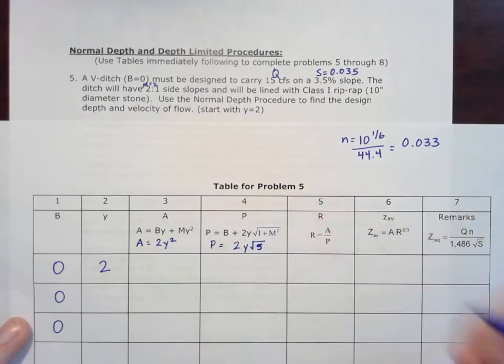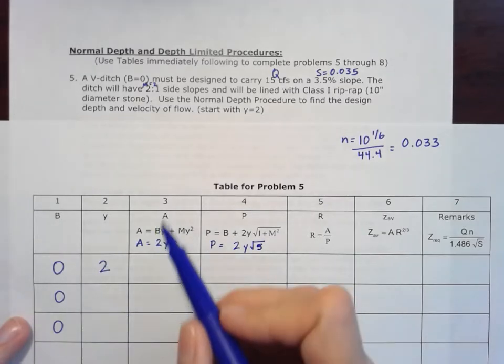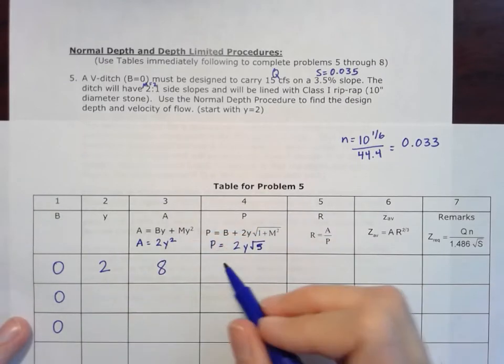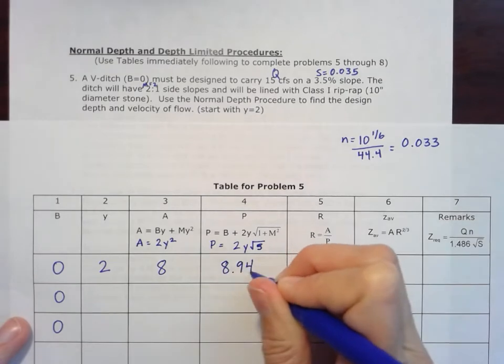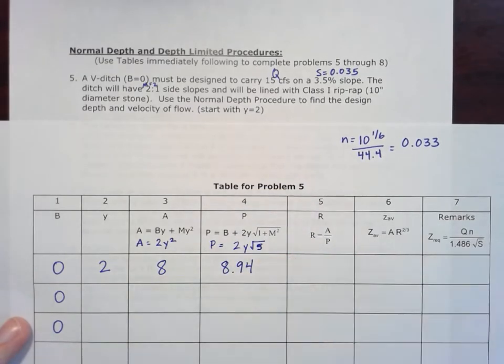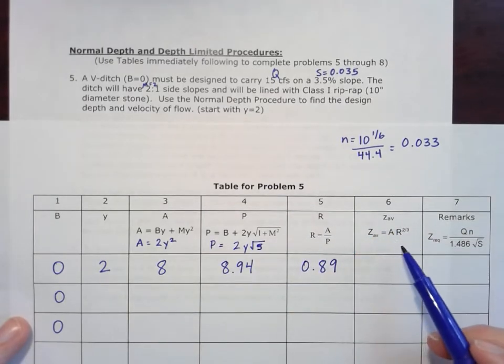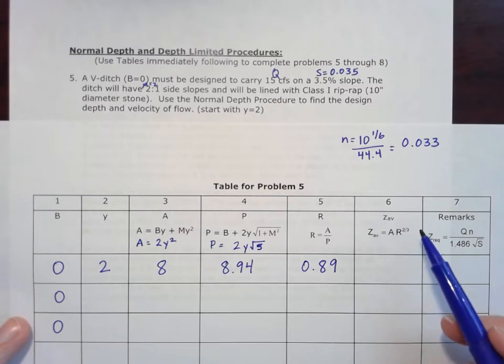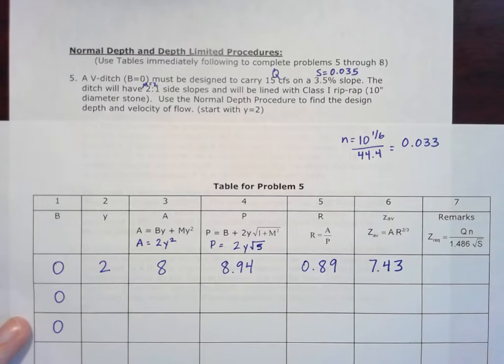So if y is 2, area becomes 8, perimeter becomes 8.94, just going to two decimal places here. And the hydraulic radius area divided by perimeter becomes 0.89, which gives us a z average of AR to the two-thirds power, 7.43.